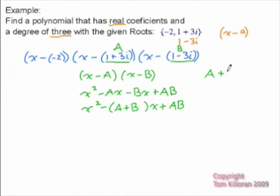First off, let's find A plus B. A is 1 plus 3i, B is 1 minus 3i, and if you add those together, the 3i's are just going to cancel and you're just going to be left with 1 plus 1, better known as 2.